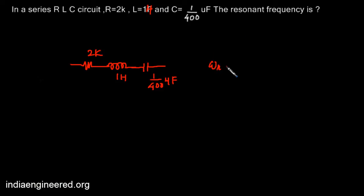What is the equation for resonant frequency? The resonant frequency is 1 by root LC, or in hertz it will be 1 by 2 pi root LC.